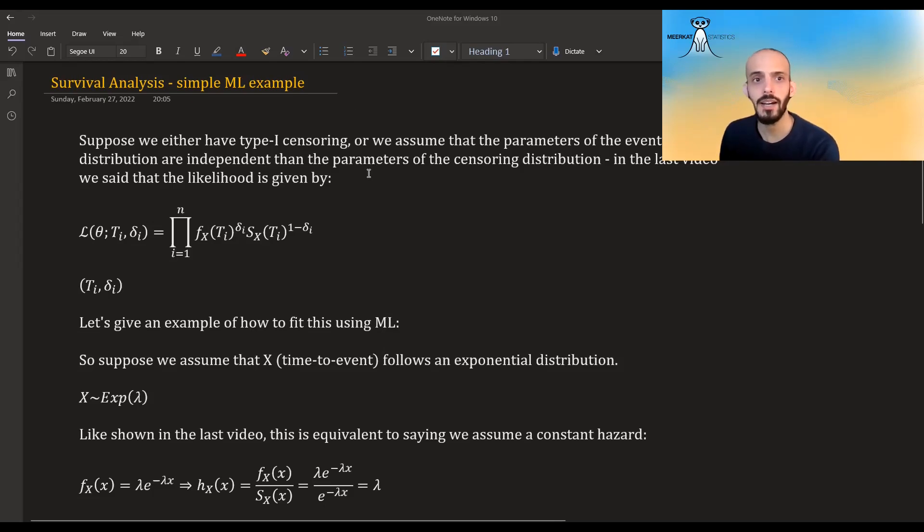Let's suppose we are either in the type 1 censoring or we assume that the parameters of the events distribution are independent or not related to the parameters of the censoring distributions. In the last video we showed that the likelihood is given by this expression over here, and I just need to make a correction about last video.